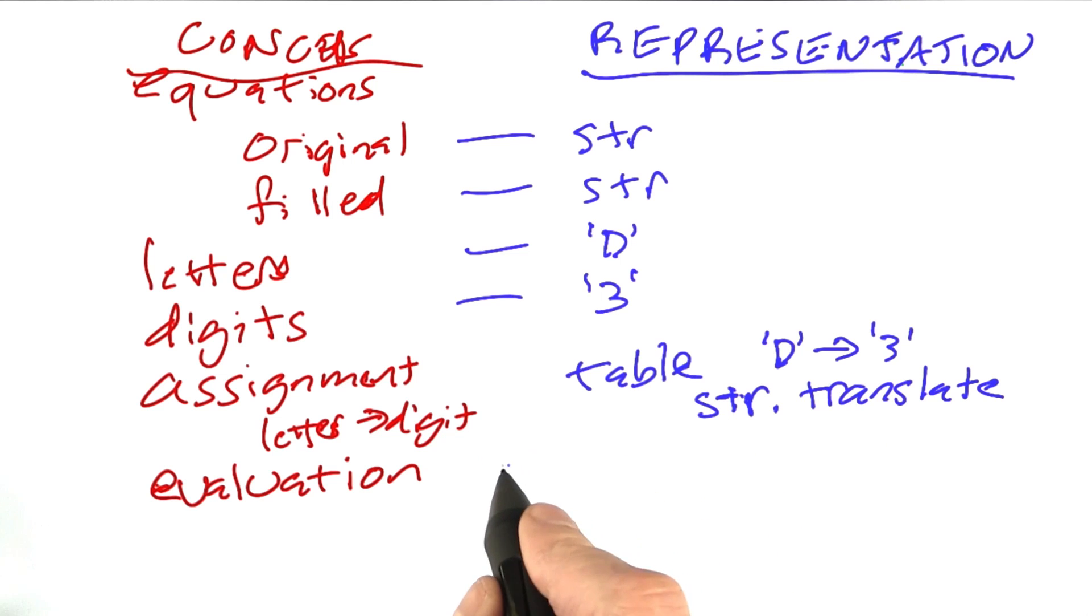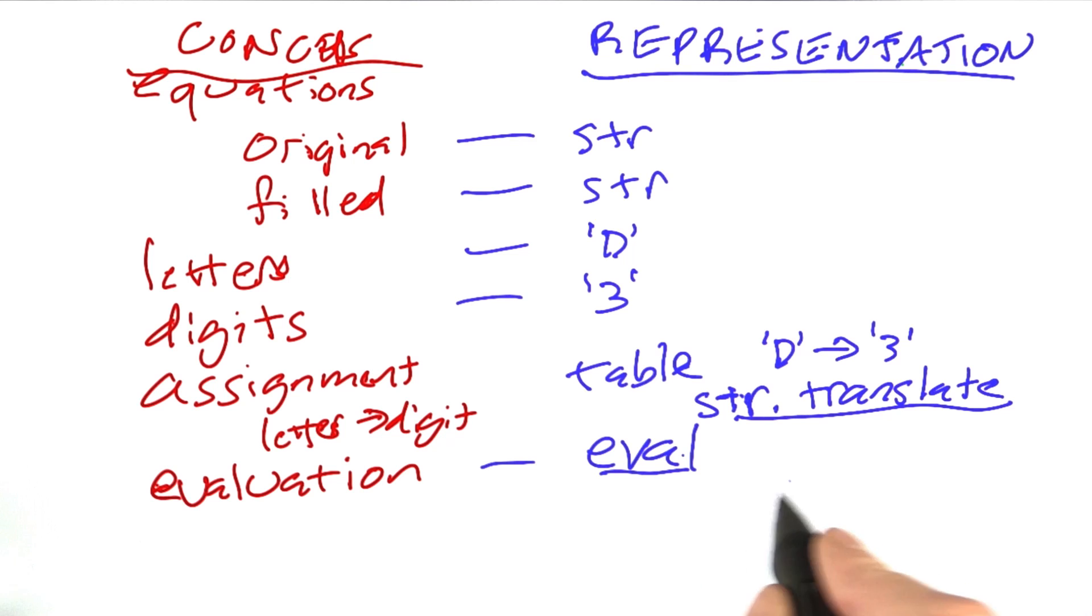And then for the evaluation, there's a function called eval in Python, which takes a string and evaluates it as an expression. You may not be that familiar with these last two items, so let's go over them. Eval is pretty simple. If we asked for eval of the string 2 plus 2, then that would give us a value 4.